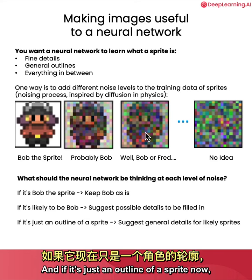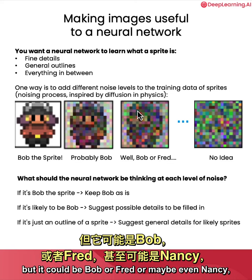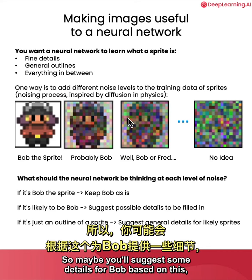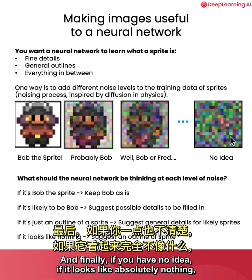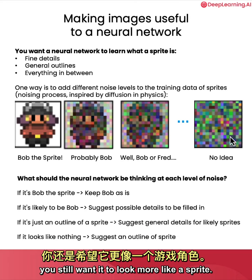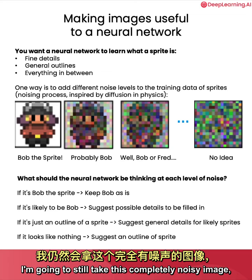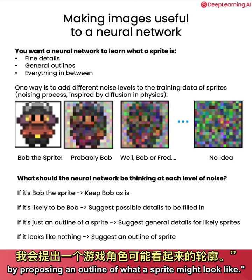And if it's just an outline of a sprite now, here you can only get a sense that this is probably a sprite person, but it could be Bob or Fred or maybe even Nancy — then you want to suggest more general details for possible likely sprites. So maybe you'll suggest some details for Bob based on this, or you'll suggest some details for Fred. And finally, if you have no idea and it looks like absolutely nothing, you still want it to look more like a sprite. You still want the neural network to take this completely noisy image and turn it into something that's slightly more sprite-like by proposing an outline of what a sprite might look like.